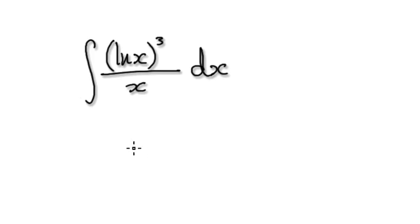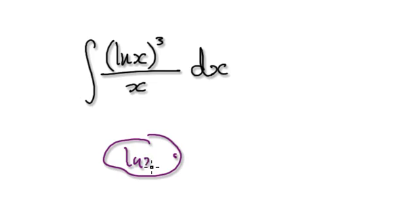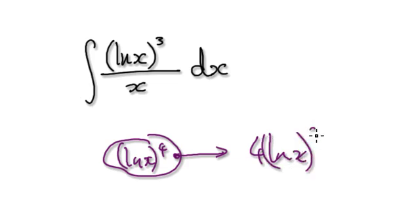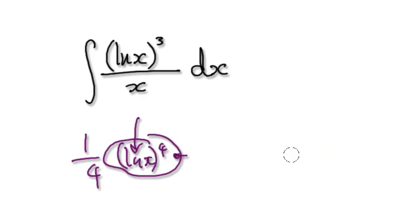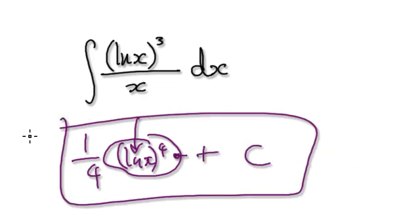So when you come to integrate it, you make your initial guess — natural log of x to the power of 4. When you differentiate it, it gives you 4 natural log of x to the power of 3 times 1 over x. Everything matches up except for the 4, so make a quarter your adjustment. Our final answer would be a quarter times natural log of x to the power of 4, plus c.